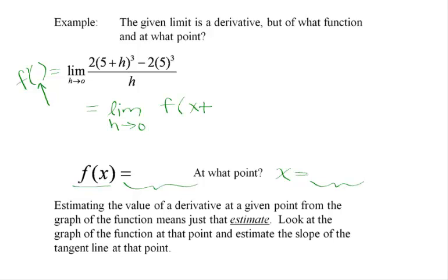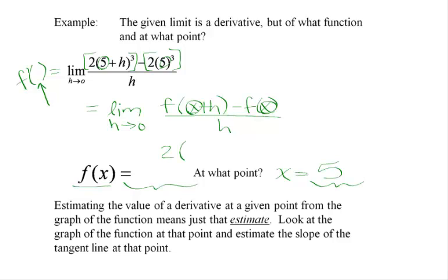We have some function evaluated at x plus h minus some function evaluated at x, all over h. So this is F of x plus h, and this is F of x — specifically at a certain x value. We can just look at where the x's reside in the definition of our derivative and clearly see that's happening at x equal 5. So let's replace 5 with x in this chunk — that's how we find what the function was. The function had to be 2x cubed, and the point at which the derivative is being evaluated is x equal 5.